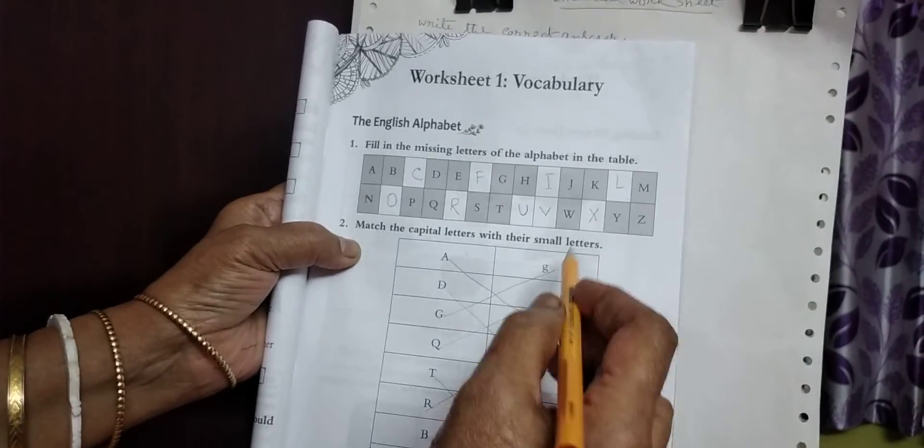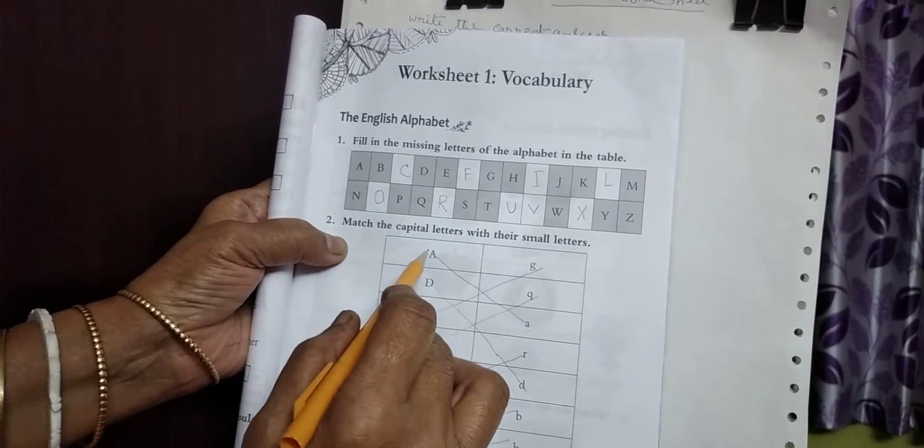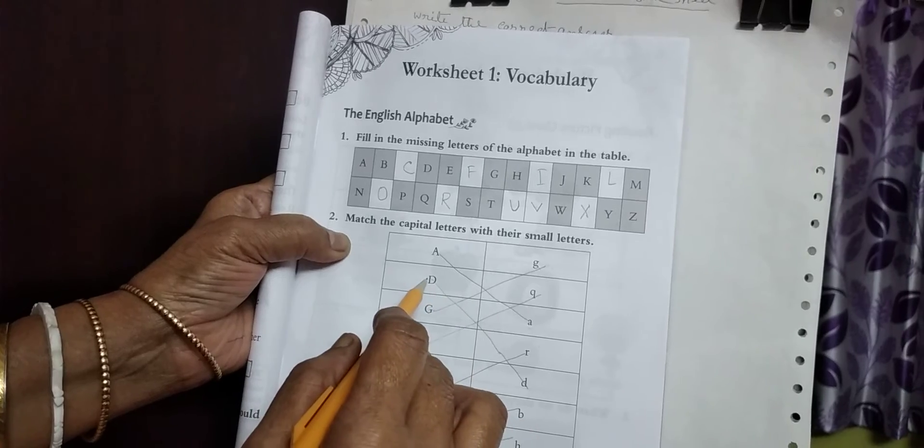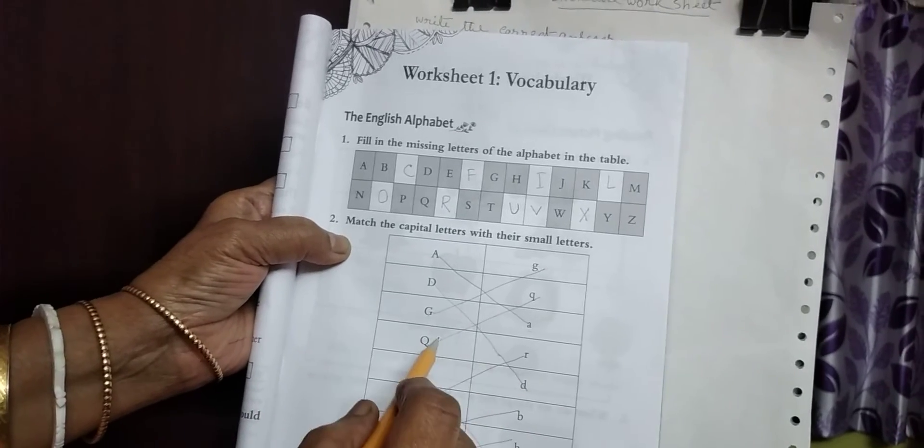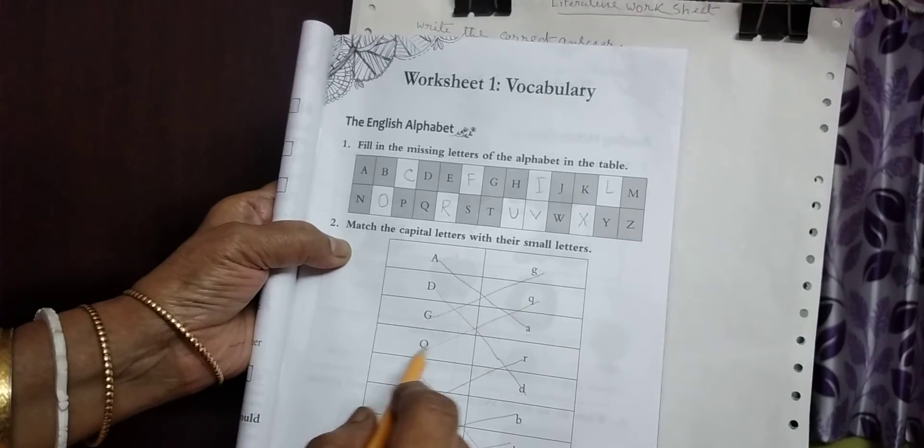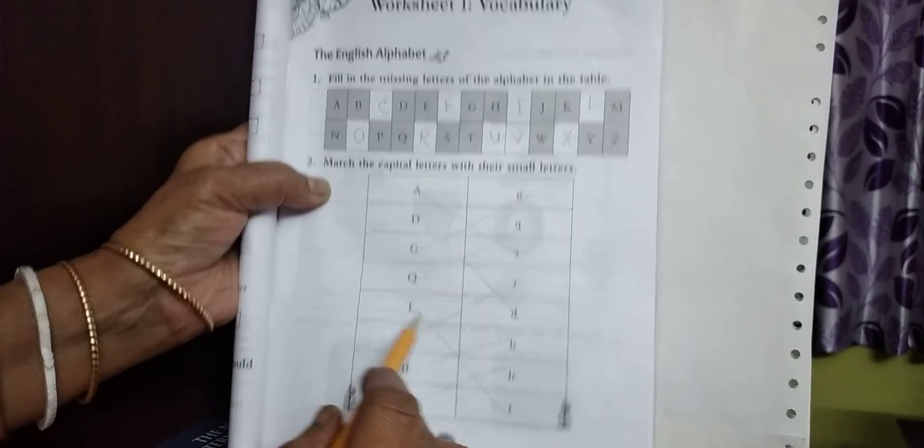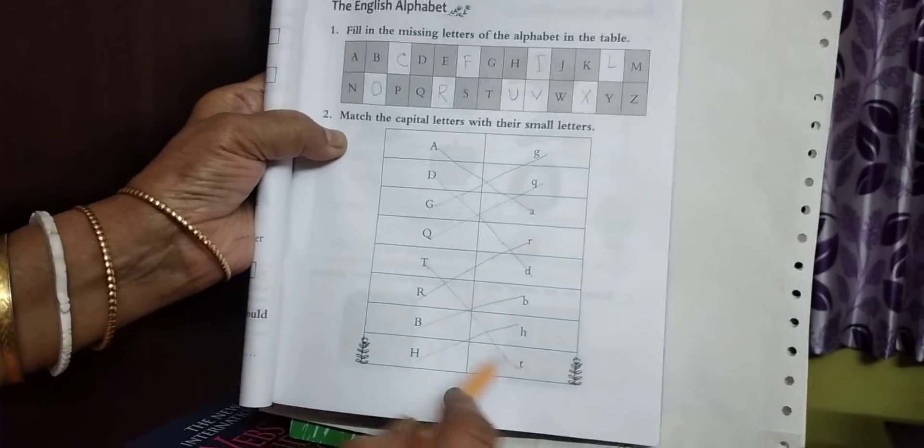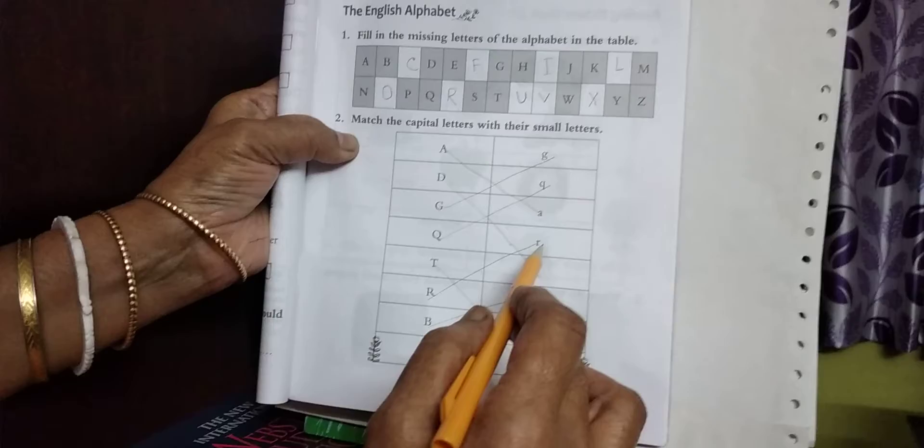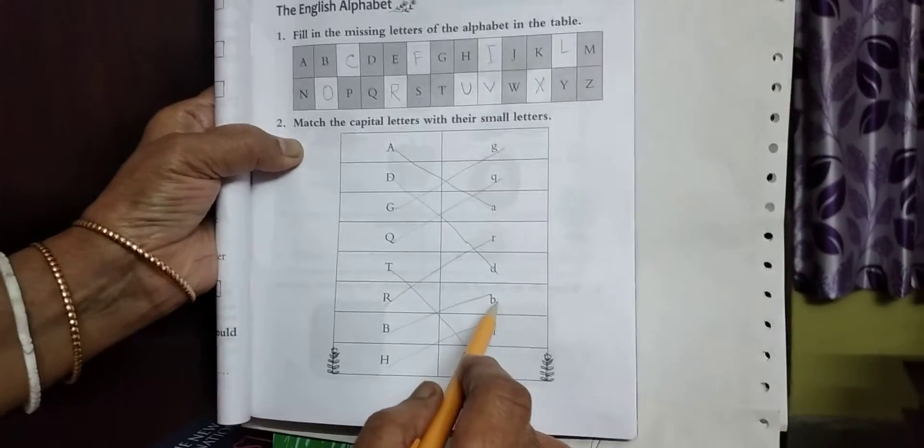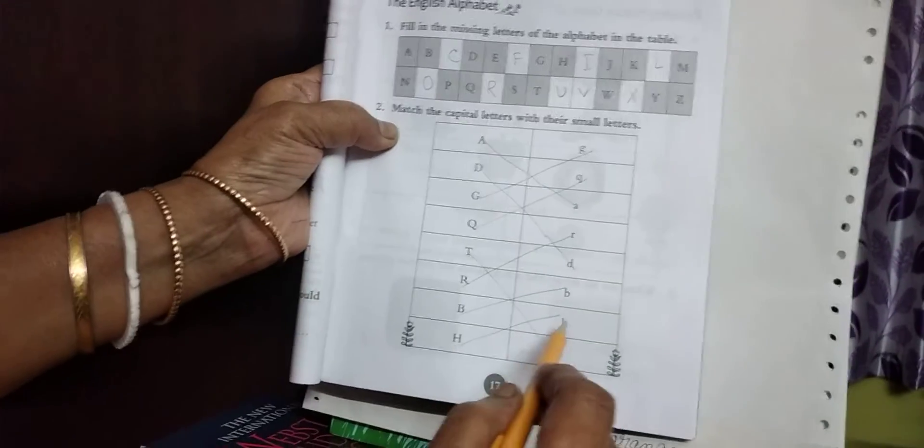Match the capital letters and small letters. A capital letter, small capital letter. D capital letter, small capital letter. G capital letter, small capital letter. Q capital letter, small capital letter. T capital letter, small capital letter. R capital letter, small capital letter. V capital letter, small capital letter. H capital letter, small capital letter.